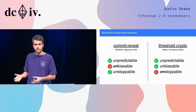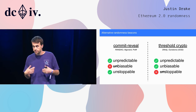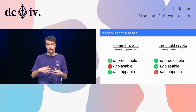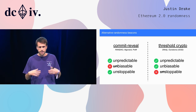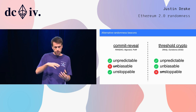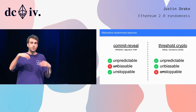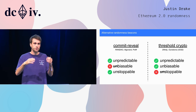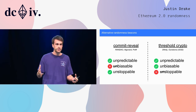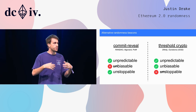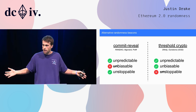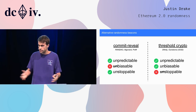Then you have approaches such as the DFINITY construction, which is based on threshold cryptography. These basically require a certain threshold of online participants to create the next random number. So if you don't have enough online participants, the randomness beacon stalls, and in the case of DFINITY, that just stops the whole blockchain.